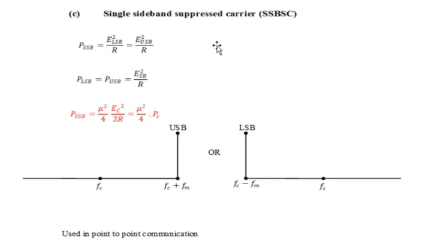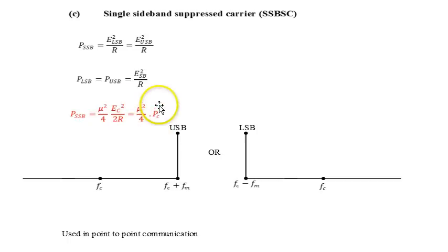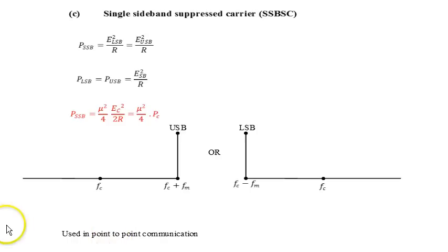The single sideband suppressed carrier (SSB) system transmits only one sideband — either the lower or the upper — with no carrier. The power in SSB is μ²/4·Pc, compared to μ²/2·Pc for DSB-SC, so even lower power is needed since only one sideband is sent. The other sideband contains the same information and is therefore redundant. The receiver required is very complex, so SSB is mostly used for point-to-point communication and not for commercial applications.